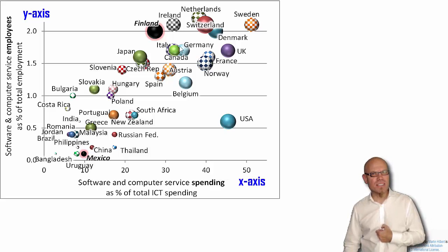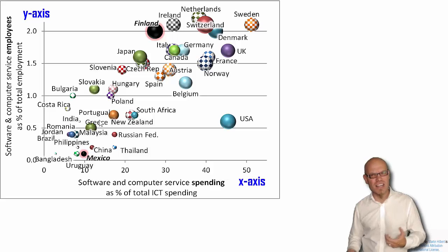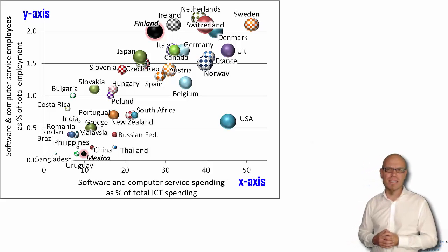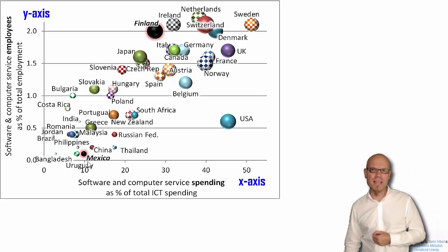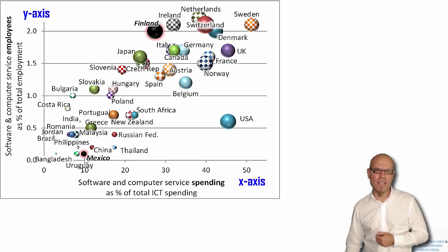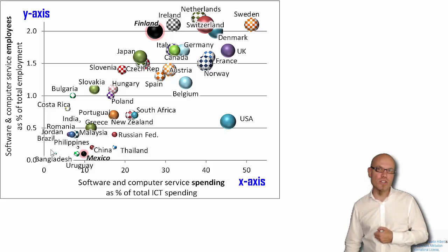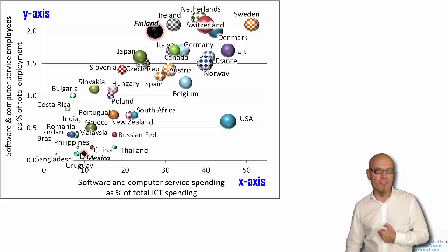Now, very interestingly, if you compare some of them, these differences are actually striking. For example, if we compare Mexico: in Mexico, 0.2% of employees work in the software industry.